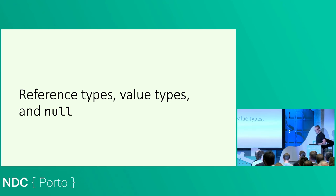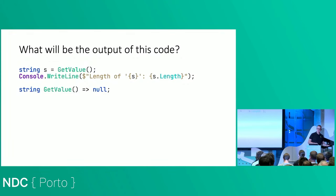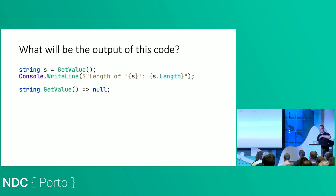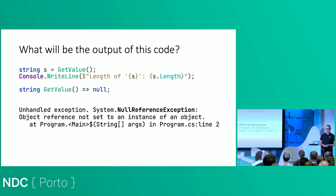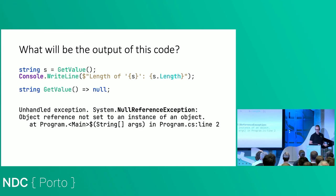If you think about reference types, value types, and null, there's a really good simple example to show what could happen in a pre-C# 8 code base without nullability. What would be the output of this piece of code if we ran it? It's not a compiler error, but it is going to throw when you run it. At compile time and editing time this will work perfectly. When you run it, it will throw a null reference exception. The reason is that we have a method called getValue which returns null, and we are dereferencing the length property of that string — so s is null at that point.